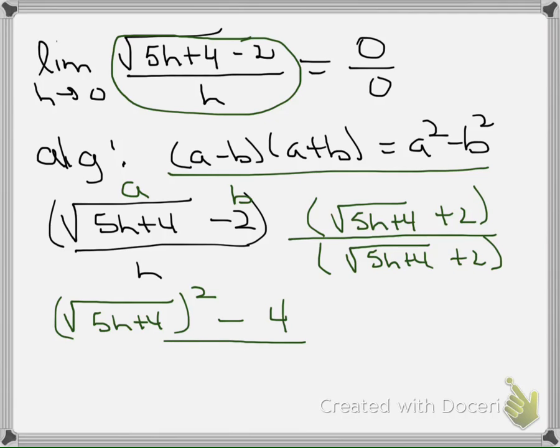And then that will be divided by, well, what's left? There's an h in the first fraction. And then there's still a quantity square root of 5h plus 4 plus 2. And I'm going to be careful with the parentheses because I don't want to mess up my algebra steps.